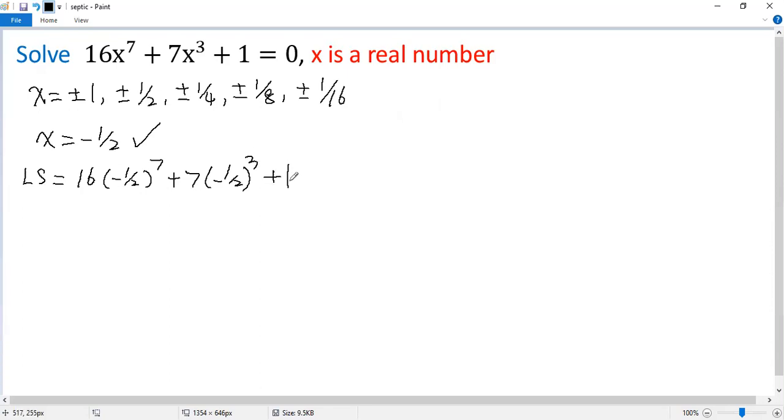plus 1. So we get negative 16 over 128 minus 7 over 8, plus 1. So we get negative 1 over 8 minus 7 over 8, plus 1.